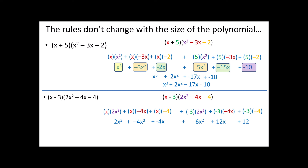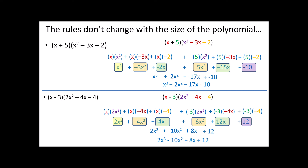Once again, I'm going to use my commutative and associative properties to rearrange and regroup — doing all of that mentally. I've got my 2x cubed. I have negative 4x squared and negative 6x squared, which I'll add together to get negative 10x squared. I have negative 4x and positive 12x, giving me 8x. And I've got that 12 on the end.